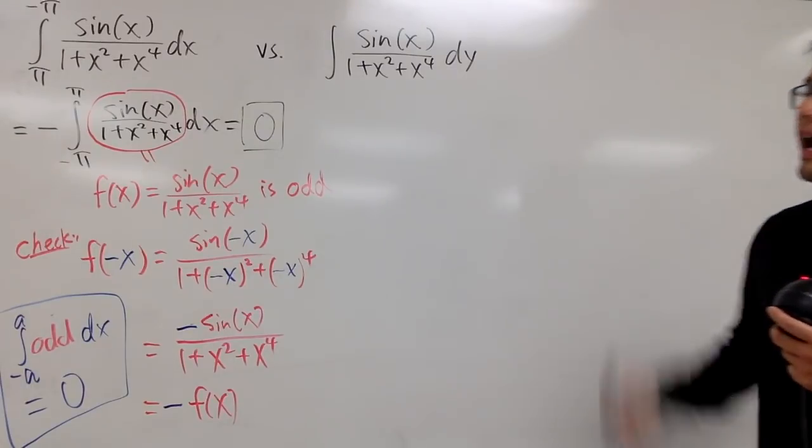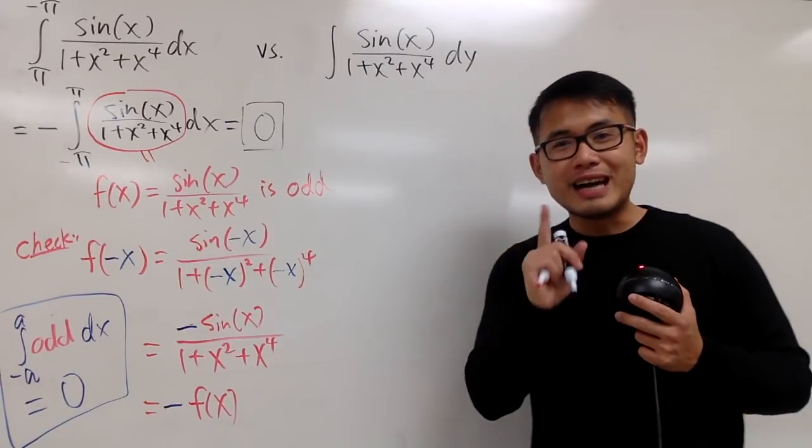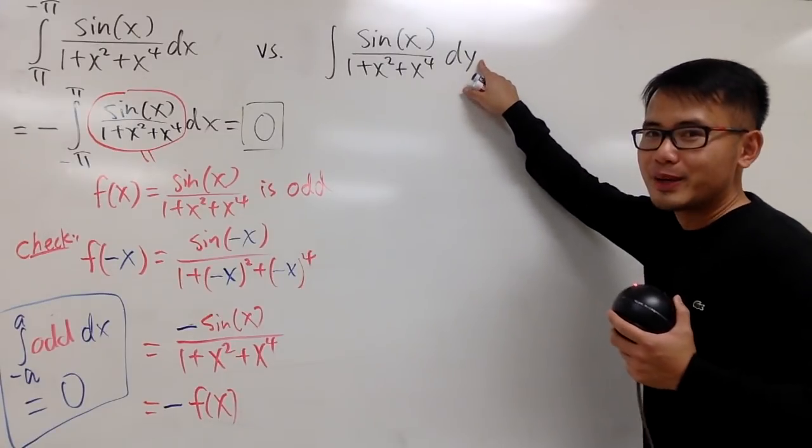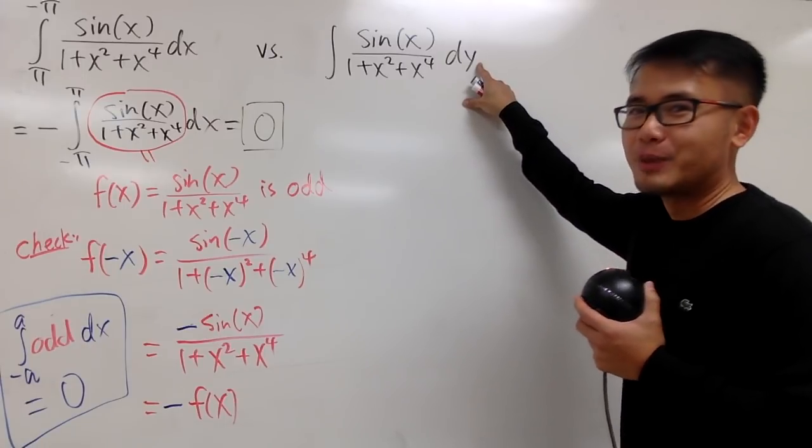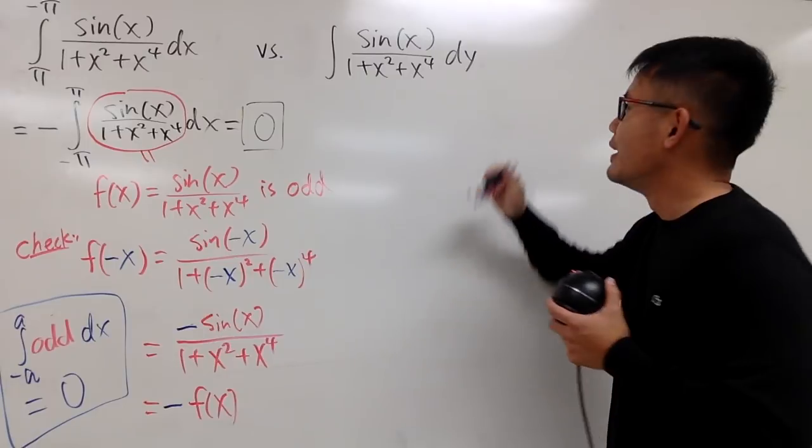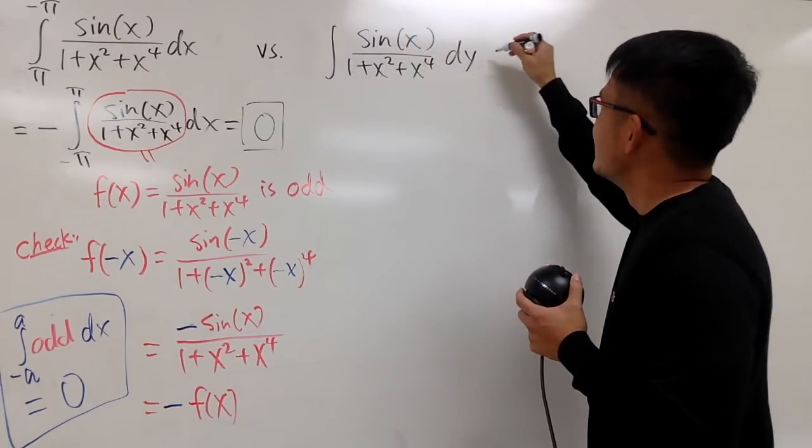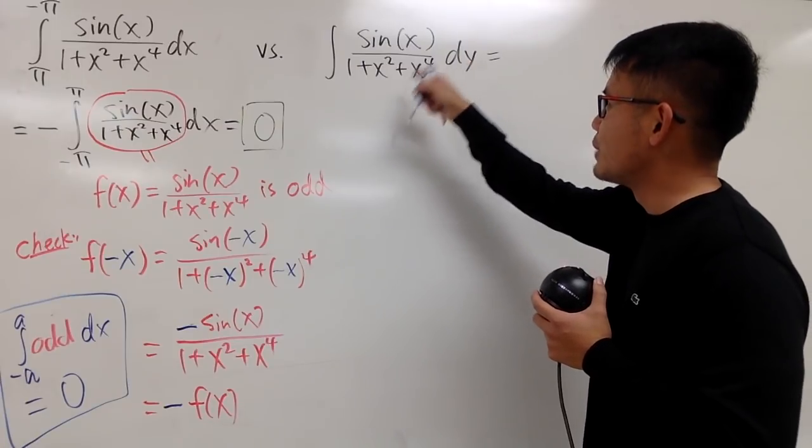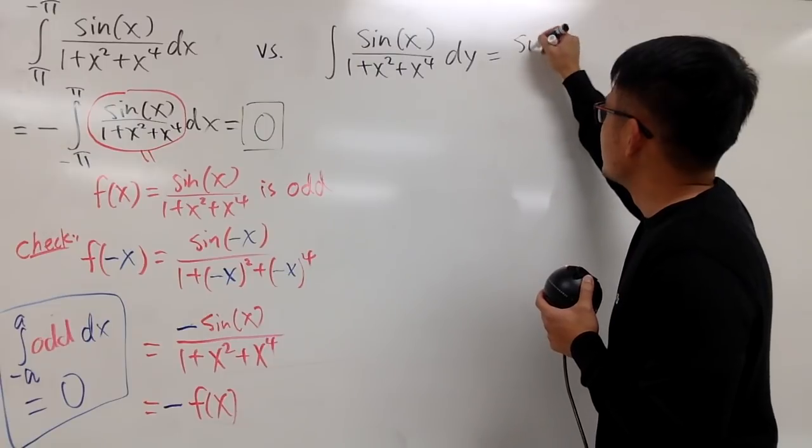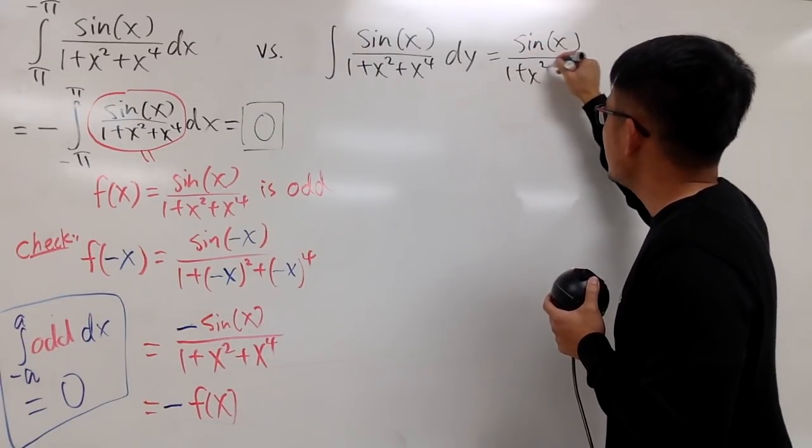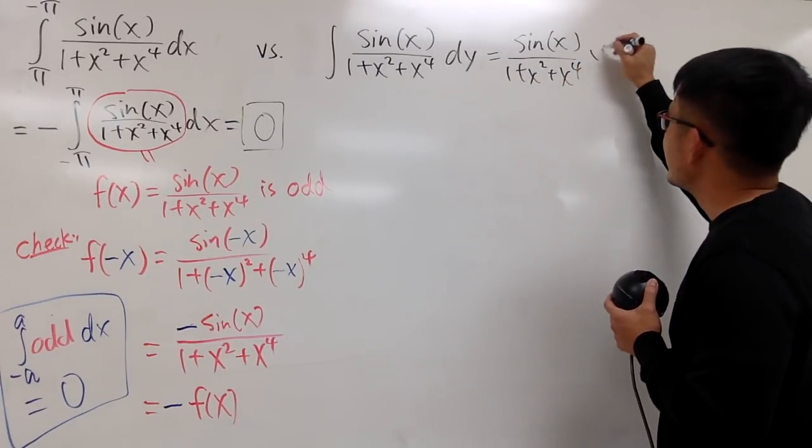Now, as a bonus, how would you actually integrate this without any number here? This is just not bad, neither, because we are integrating with respect to y. Why am I doing this? Calculus 3, kind of. So in the y world, this is just like a constant. That means all we have to do is just write this down and put a y next to it. So it's a constant multiple. This is sin of x over 1 plus x squared plus x to the fourth power, and then multiply by y. Well done.